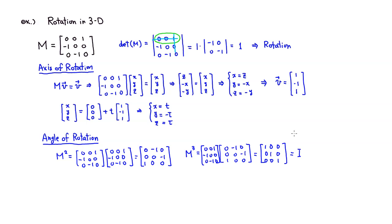Going back to the original place means it goes around once. So 360 divided by 3 means the angle is either positive or negative 120 degrees. Let's figure out which one it is by testing some vectors.